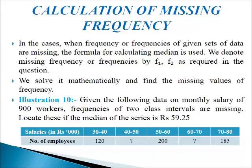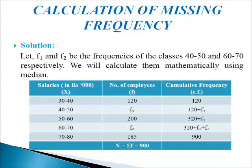We are provided with the data of monthly salary of 900 workers. Frequencies of two class intervals are missing — in 40 to 50 and 60 to 70. We have to locate these frequencies if the median of the series is Rs 59.25. Let us start by making a table of three columns.